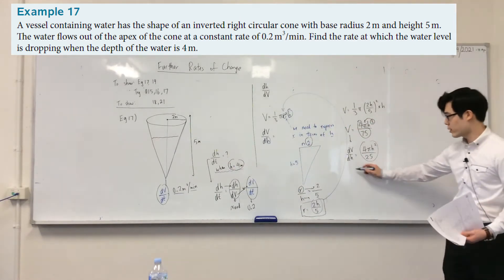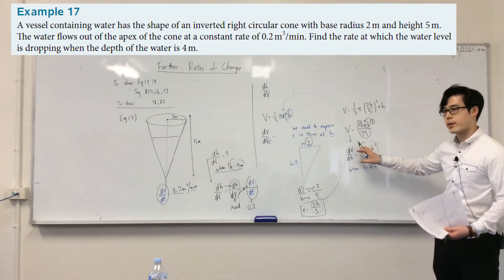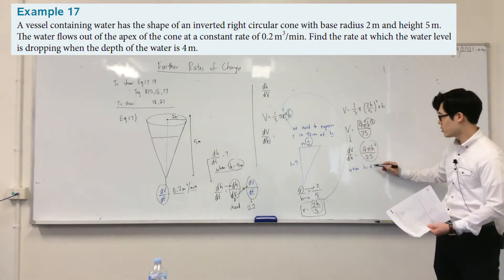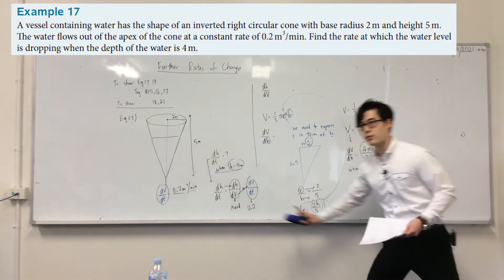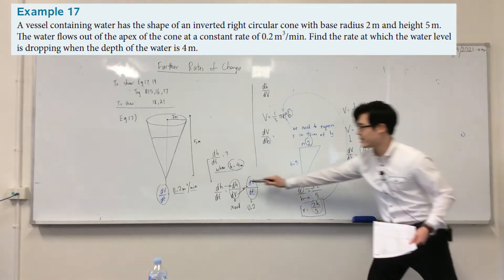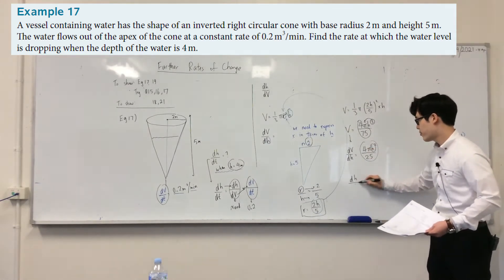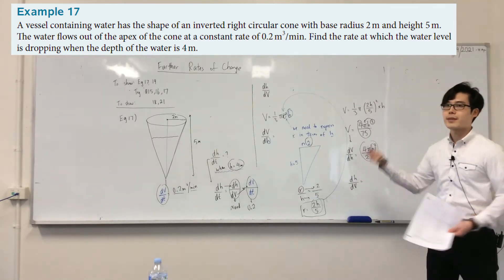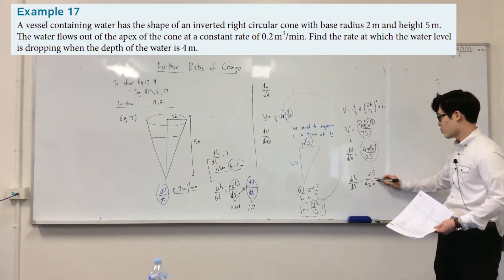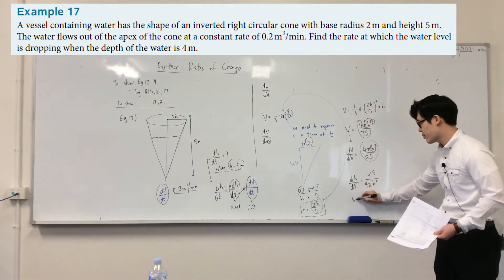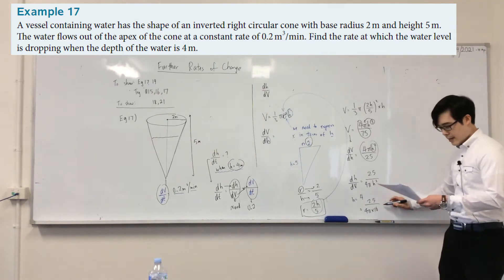The question says h = 4, so we substitute that in. But wait — I need dh/dV, not dV/dh, so flip it first. Reciprocate the expression first to get dh/dV, then substitute h = 4. That gives you the numerical value, which you then multiply by the known dV/dt.